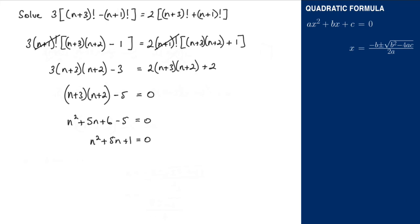So we know what our a term is. We've got a equals 1, b equals 5, and c equals 1.